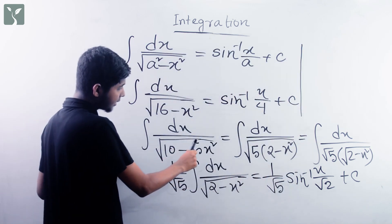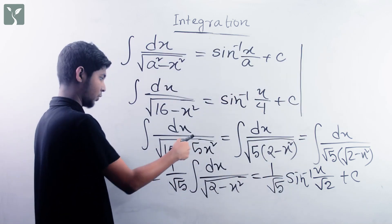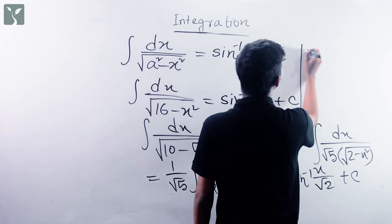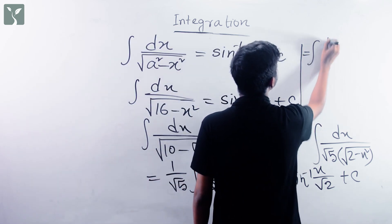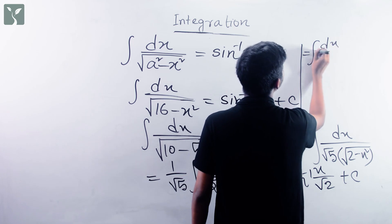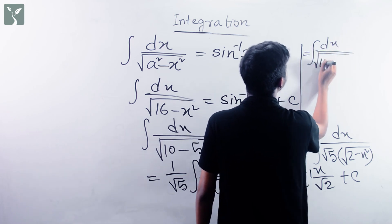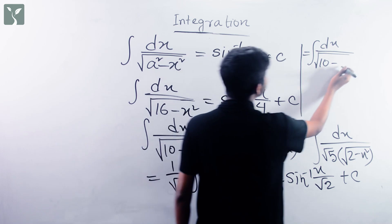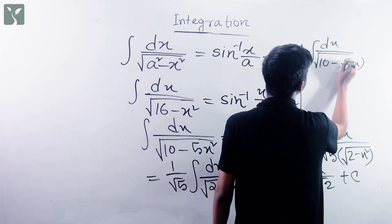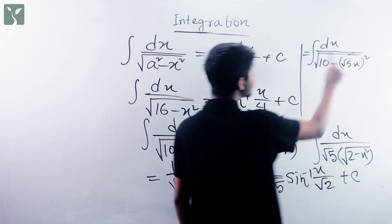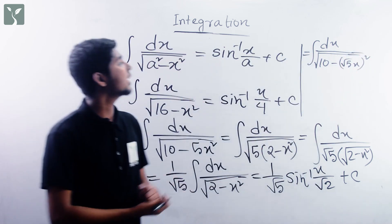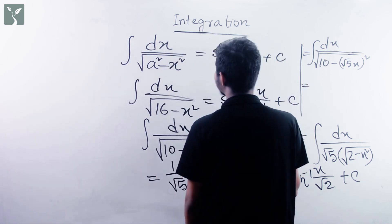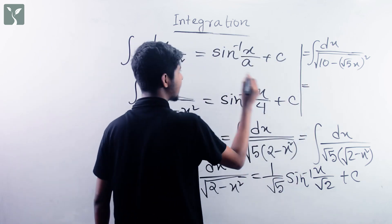Now I will show you the same problem using a direct method. For 10 minus 5x square, we can write this as 10 minus the quantity root 5 x whole square. Basically the effective x term here is root 5x. So using the direct formula, we apply sin inverse directly.